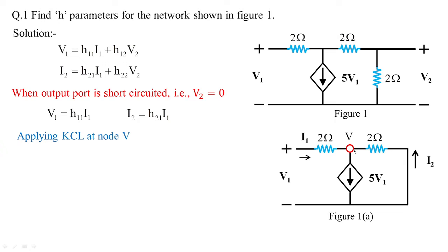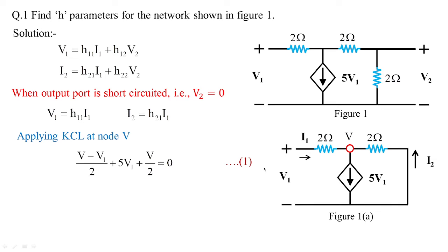Assuming this node to be at higher potential, the KCL equation is framed as: (v − v1)/2 is one branch current, then 5·v1 is the dependent current source current going away from the node (hence positive), and v/2 is another branch current. Since v2 is at higher potential, i2 will be equal to −v/2.